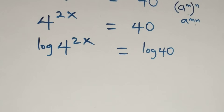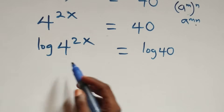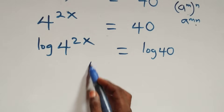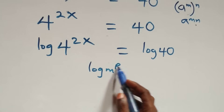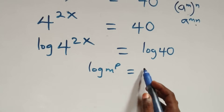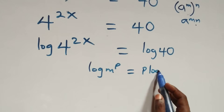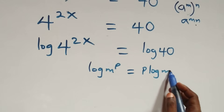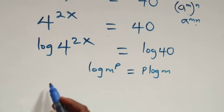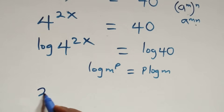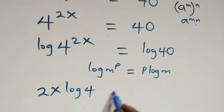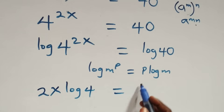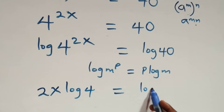We apply the power rule of logs, where when we have log m raised to power p, this is the same thing as p log m. So what we have becomes two x log four equals to log forty.